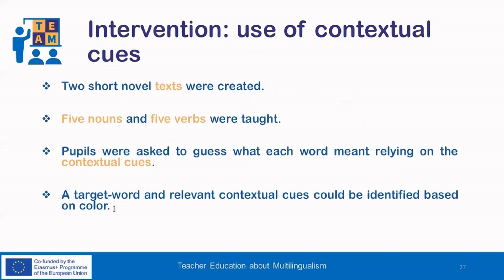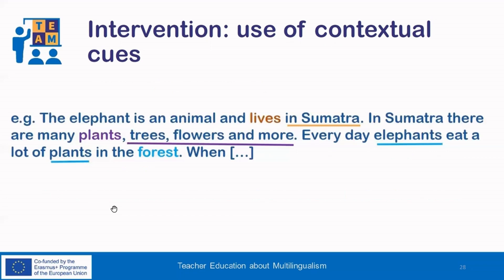Finally, let's look at some details regarding the intervention involving contextual cues. Two novel short texts were created, each including 5 nouns and 5 verbs — 10 words in total. The main task was that the pupils had to try to guess what each target word meant based on cues available in the text. To facilitate the process, each pair of unknown words and its useful contextual cues could be spotted based on the color with which they were marked. For example, one of the target words was 'plants,' which was marked in purple, and its useful cues — trees, flowers, and more — were underlined also in purple.